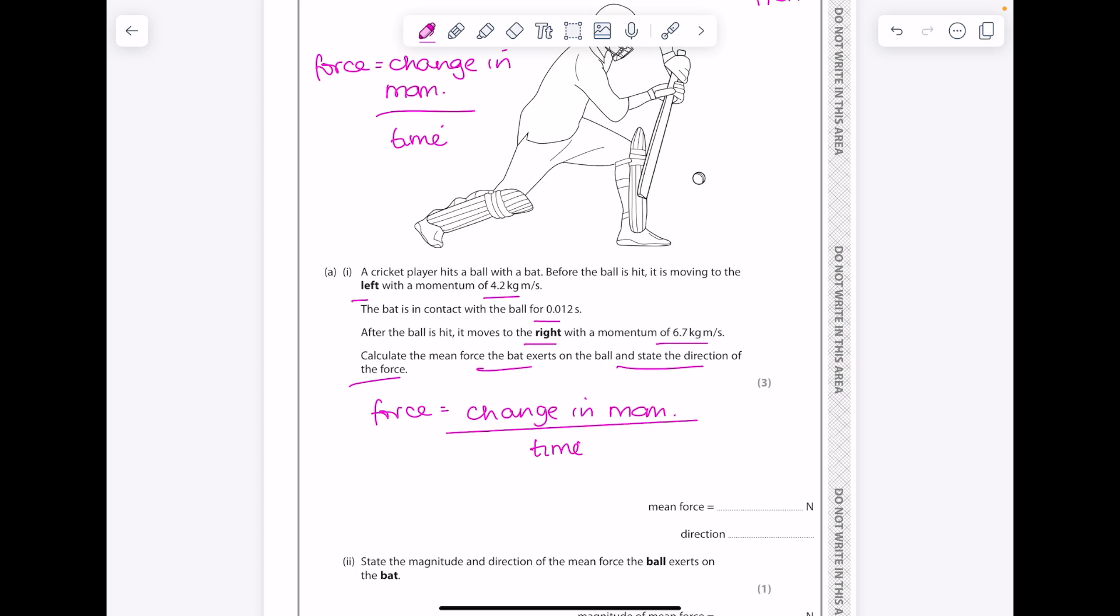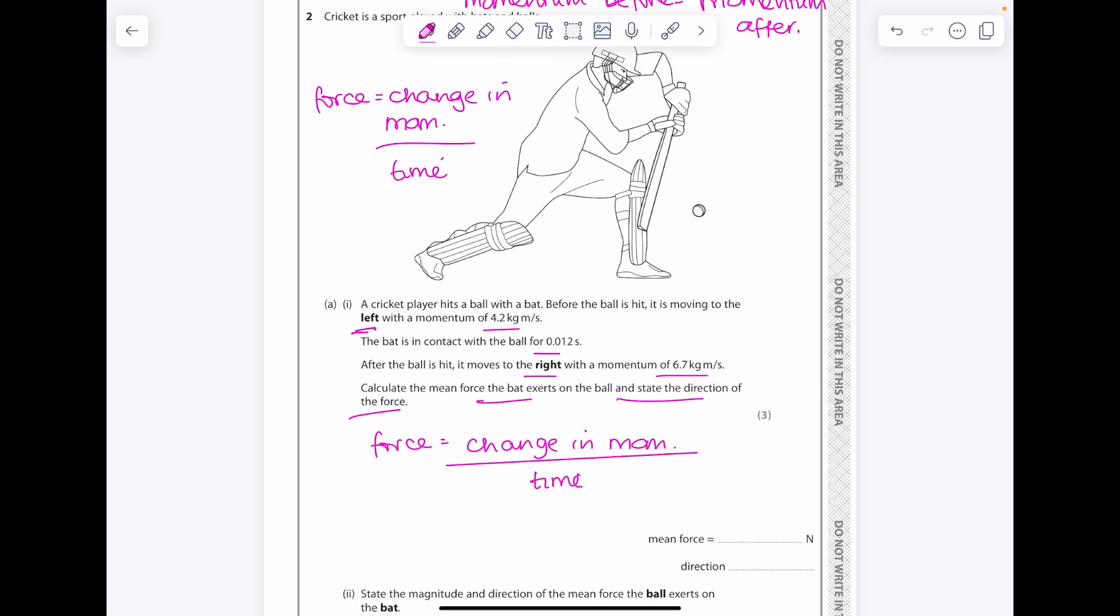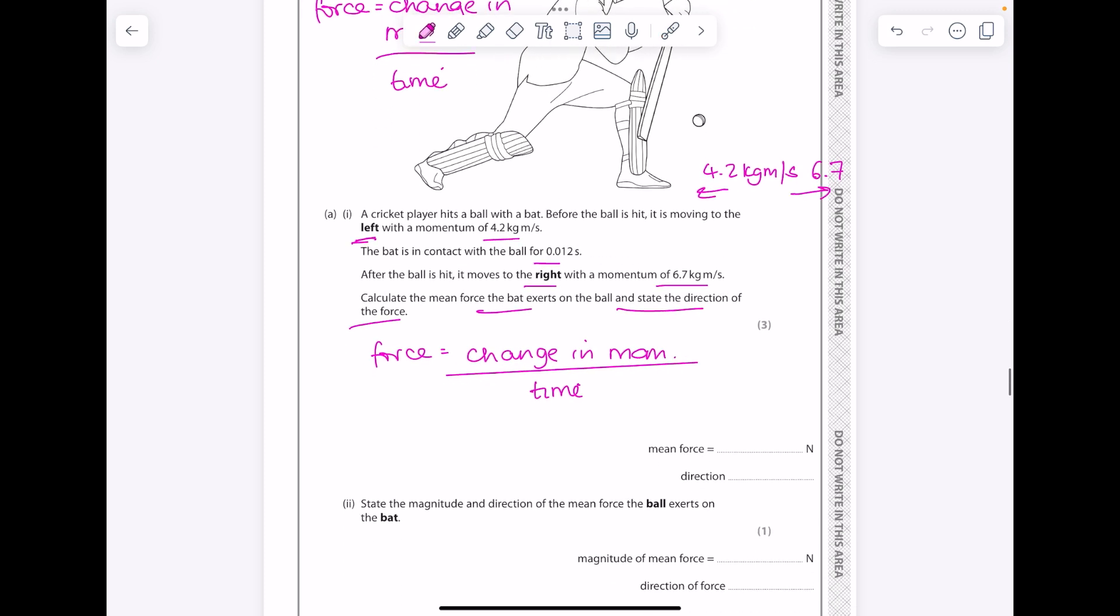What is our change in momentum? Well look, they've bolded that, so that's important. It's saying that the ball's moving to the left initially with a momentum of 4.2 kg·m/s, and then it moves to the right with a momentum of 6.7. So what's the change in momentum? Well it must be the total of these two numbers. Do read the English of the question to make sure your maths is going to make sense. So that gives us a change in momentum of 10.9 divided by the time frame which is 0.012 seconds. So that gives us an answer to two sig figs of 910 newtons. And the direction is going to be - look at what the cricket player is doing - it's going to be to the right.